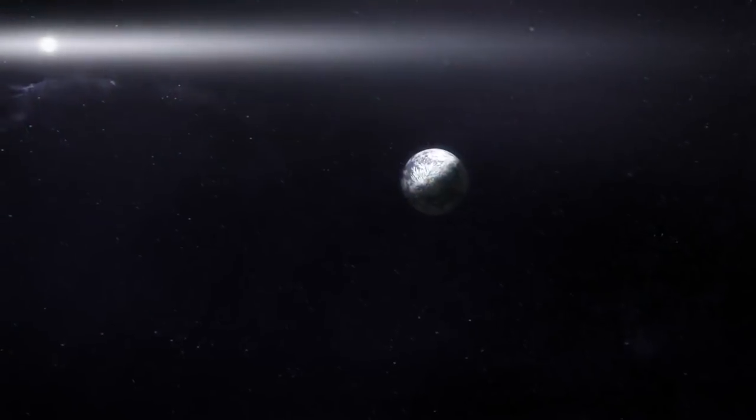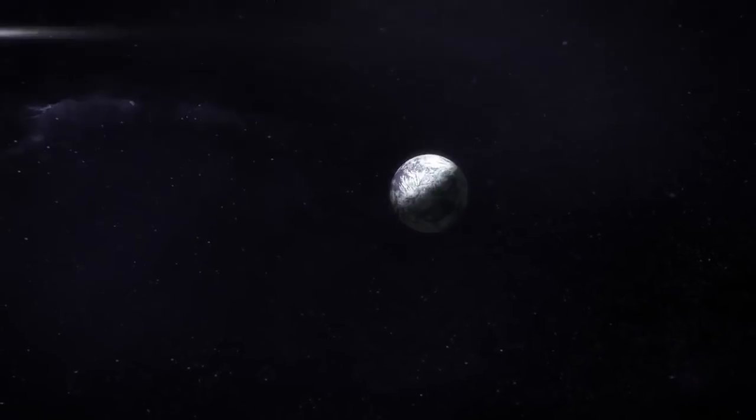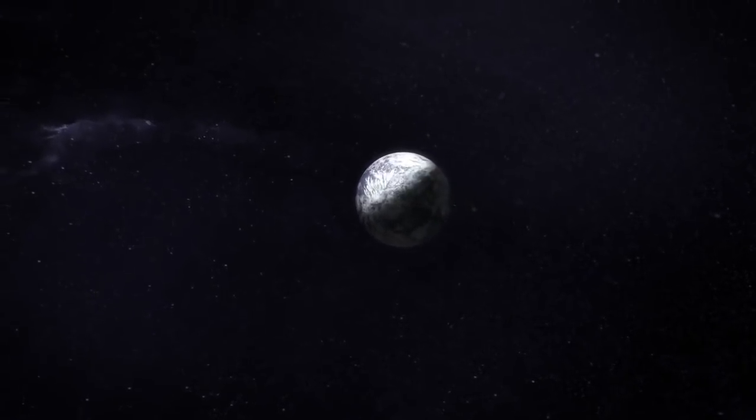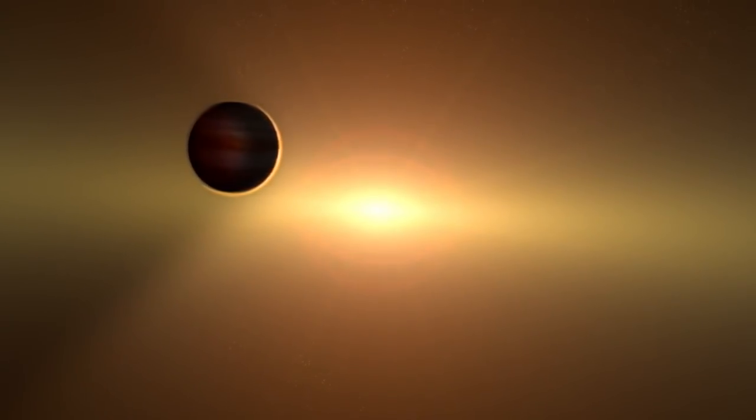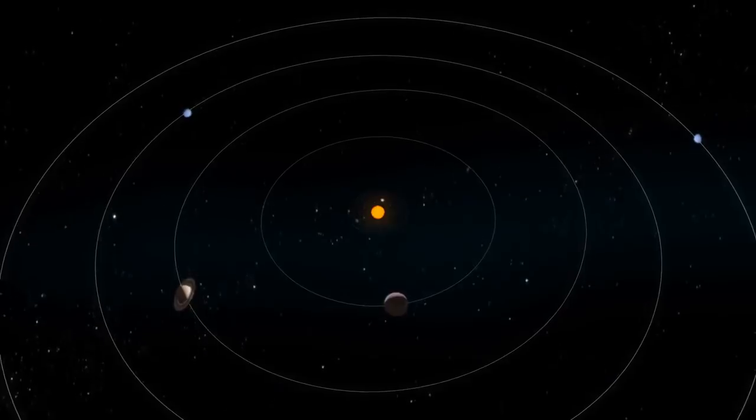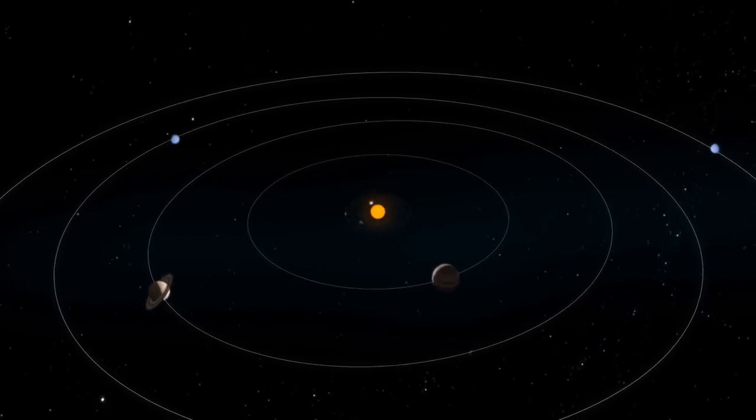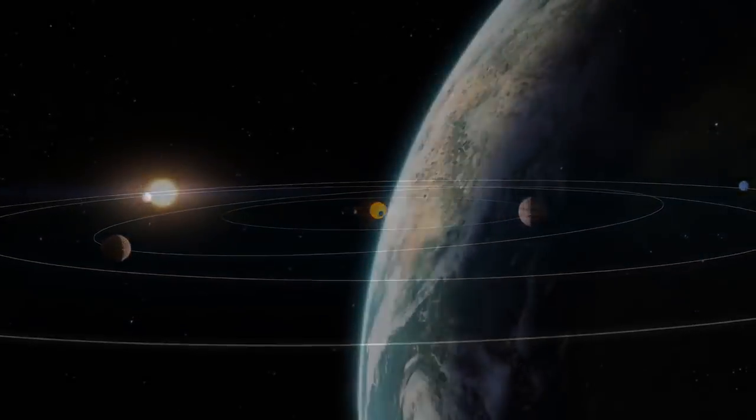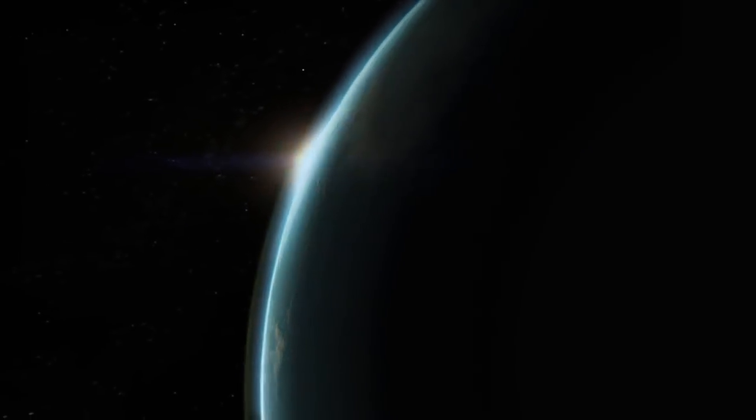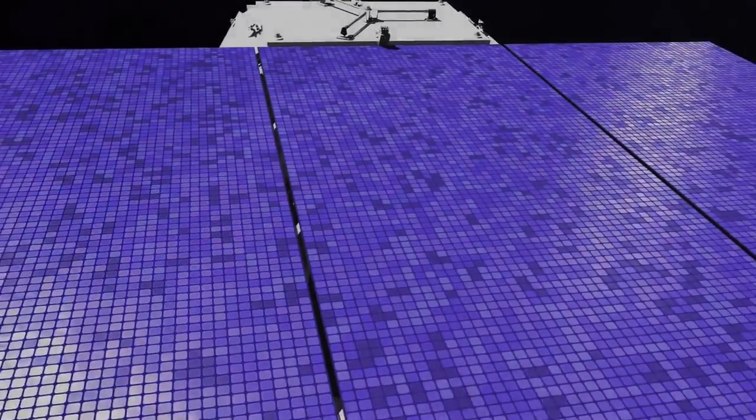We have confirmed over 3,000 planets orbiting stars other than the Sun, but most of these extrasolar planets are huge and very close to their host star. How common are planetary arrangements like our own, and how many planets in our galaxy have the potential to harbor life? These fundamental questions are part of what drives NASA science and they spur the development of new space observatories.